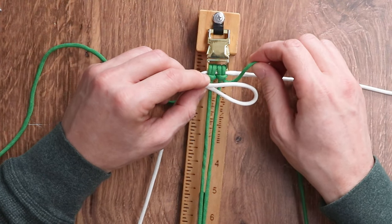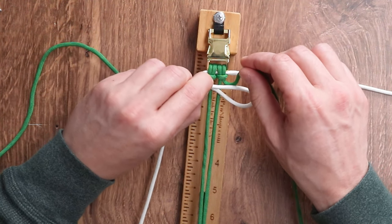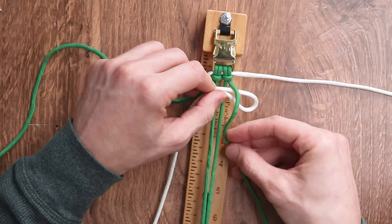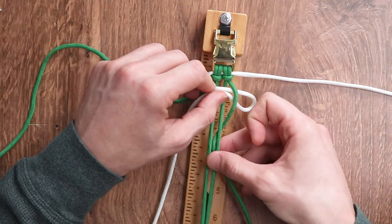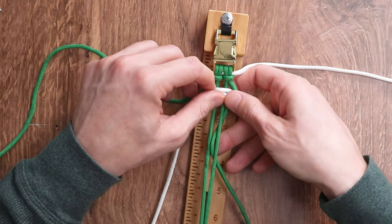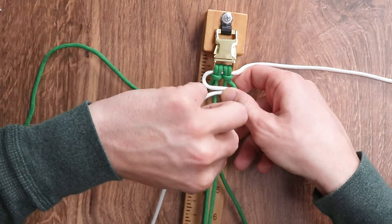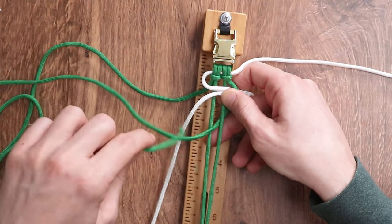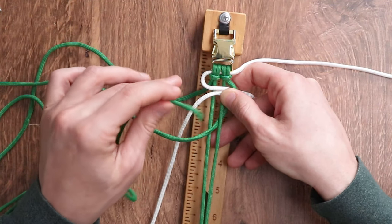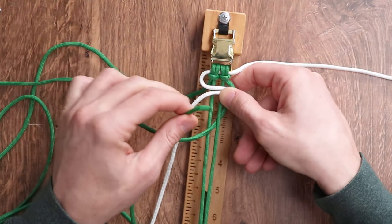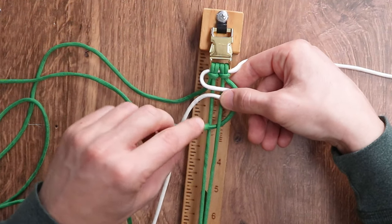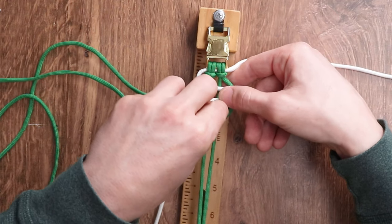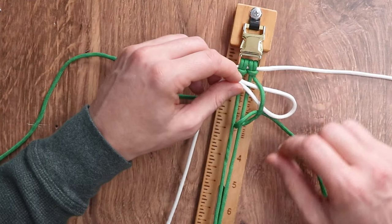Our next step, we're going to take the right working strand of our green, go over top of that loop. We're going to take the same strand and go under the right inner core strand. We're going to bring it all the way through, and when we get the end of our right working strand, we're going to go in between the green and the white loop.